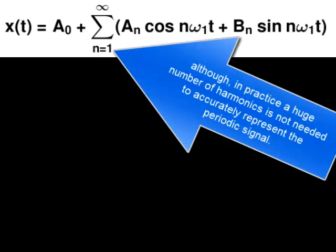N is the harmonic counter that counts from 1 to infinity, although in practice a huge number of harmonics is not needed to accurately represent the periodic signal.